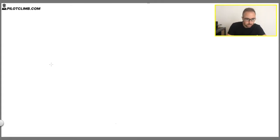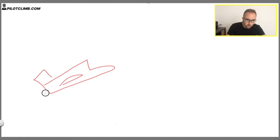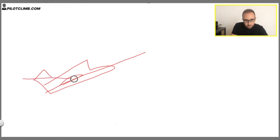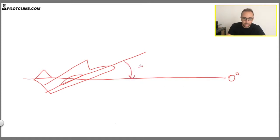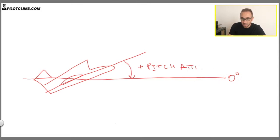Let me jump into the whiteboard and draw an aircraft. The longitudinal axis of the aircraft is the axis that goes through the plane. If I draw the horizon, that's the zero degrees reference. If the aircraft flies along the horizon, it's going to fly straight and level without climbing or descending. In this case, as you can see, it has a positive pitch attitude.